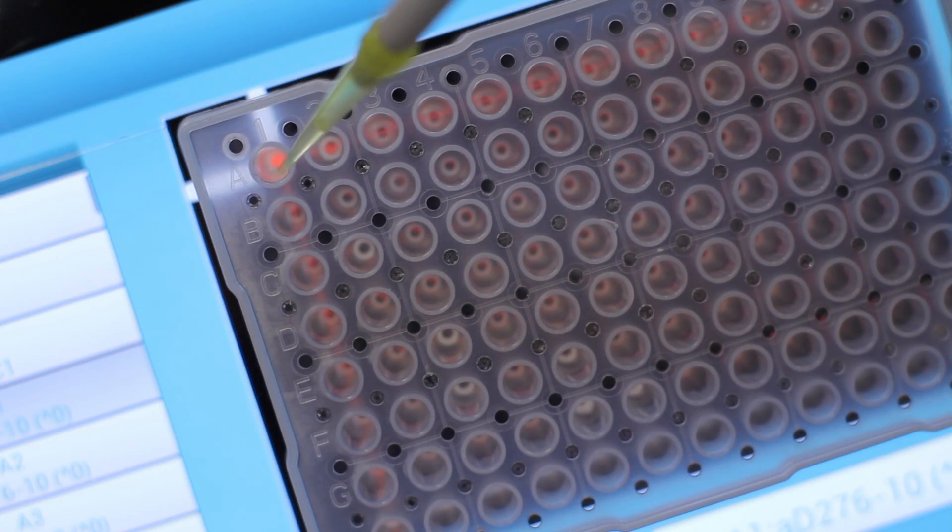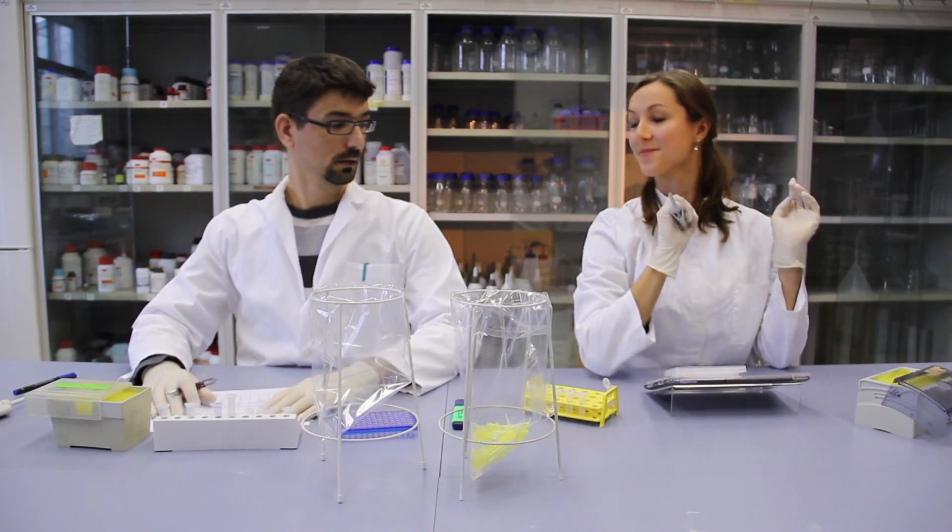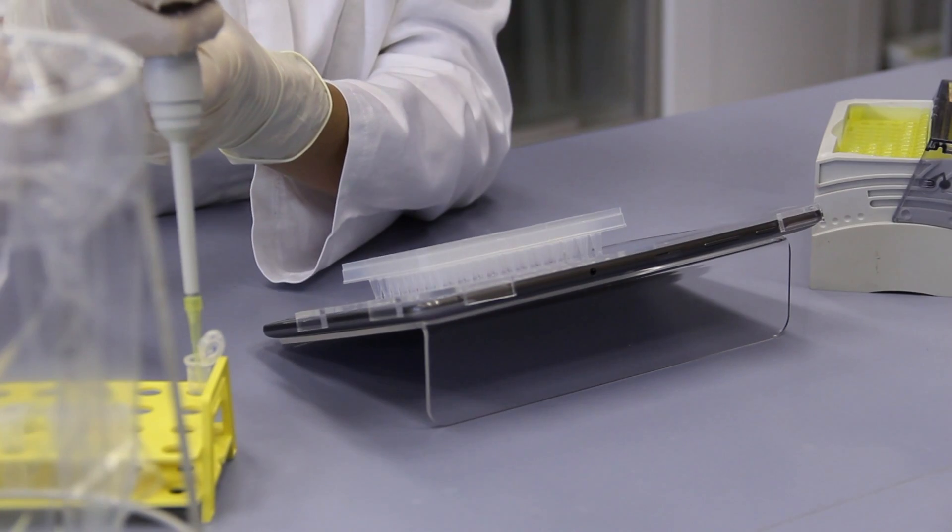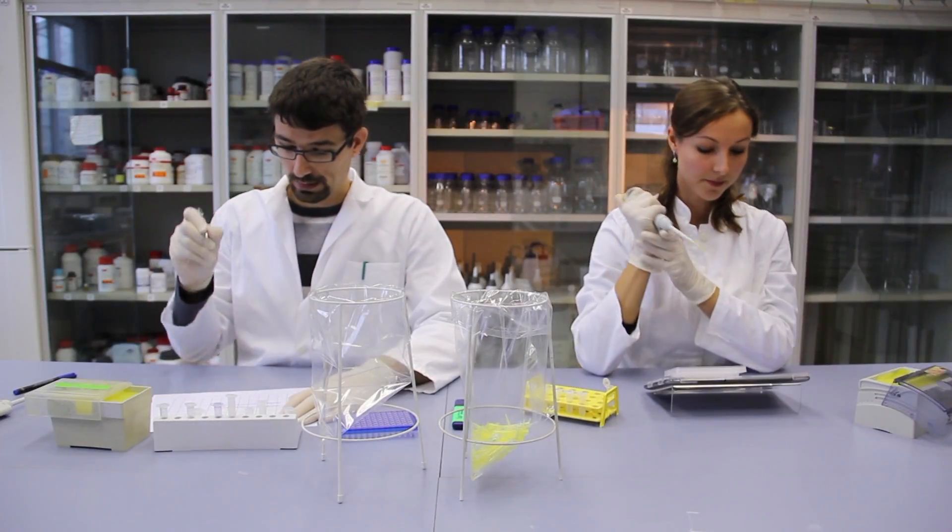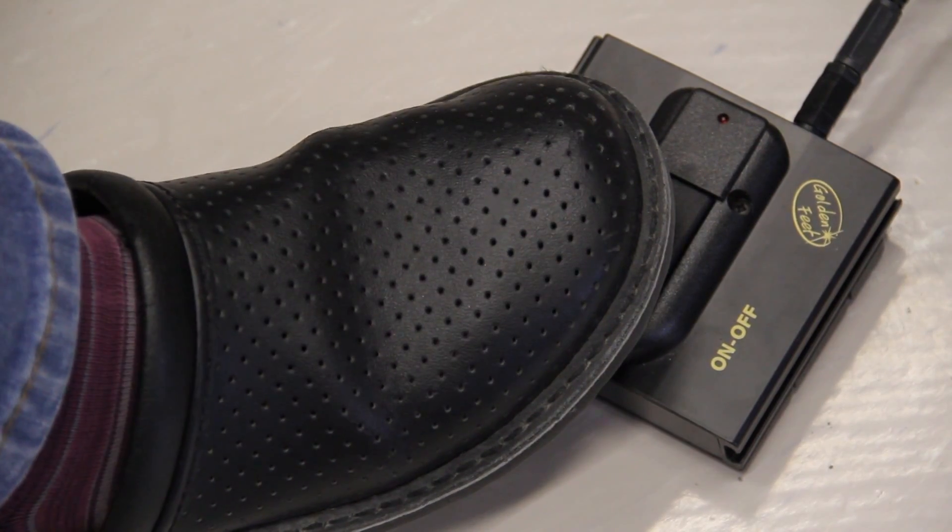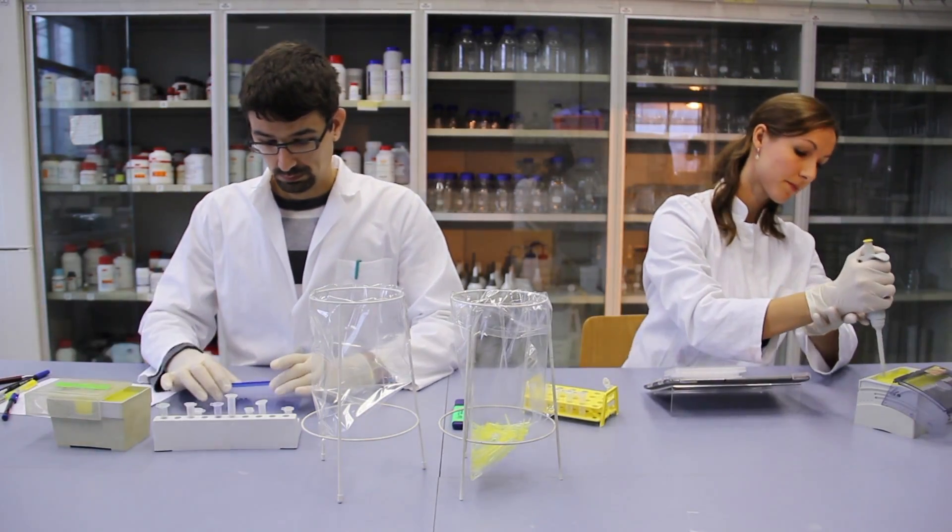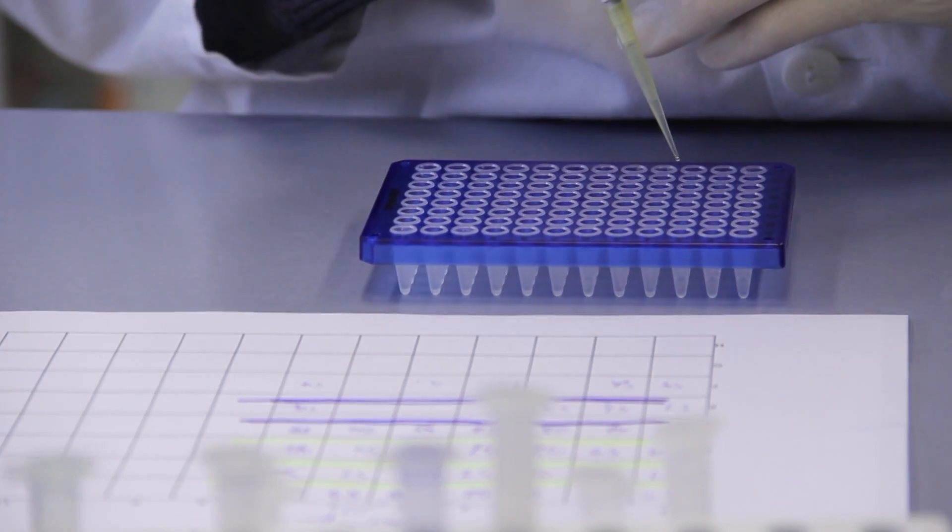During pipetting, a red position light will navigate you through the plate and point out which well the next sample should be placed into according to your pipetting plan. Switching to the next well is easy: you can choose to use the timer, the foot switch, or the next button. No more wondering about where you left off.